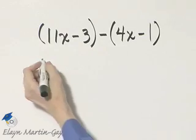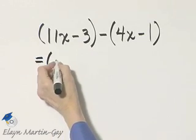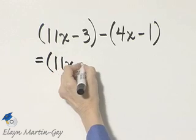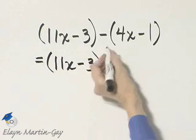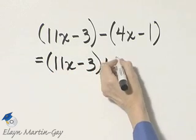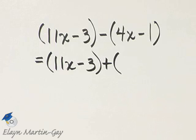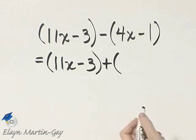Here we are subtracting two polynomials. It will be the first polynomial, and I can write this as added to the opposite of the second polynomial as we subtract as usual.